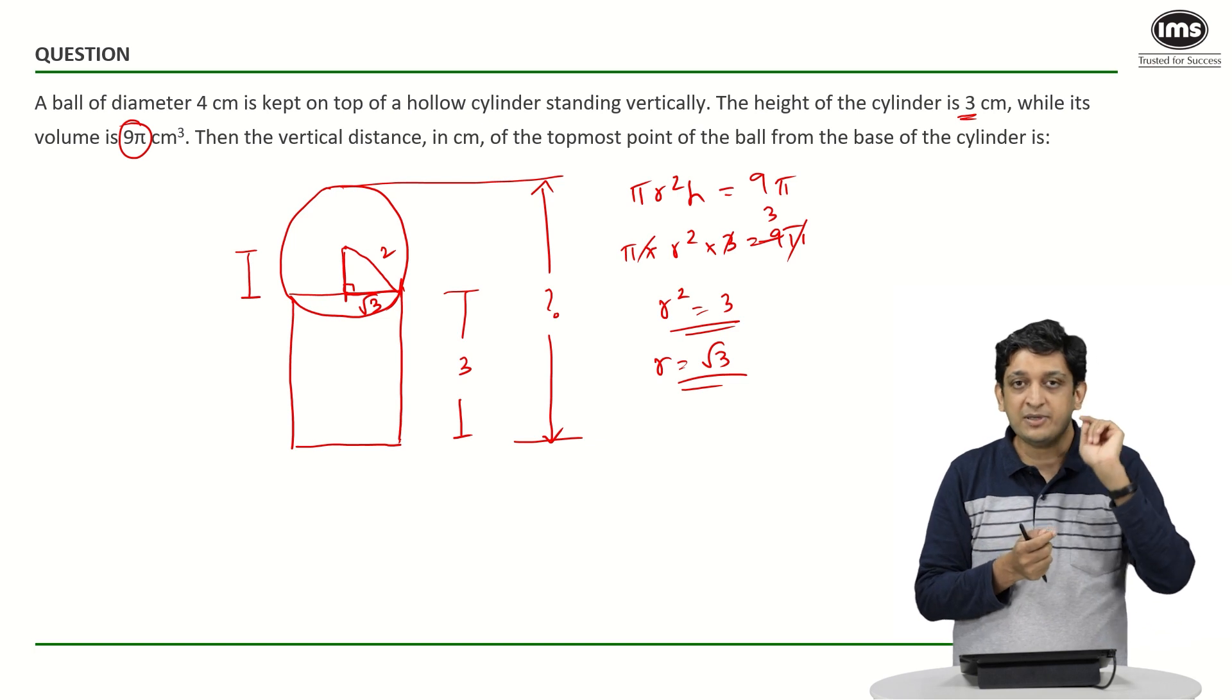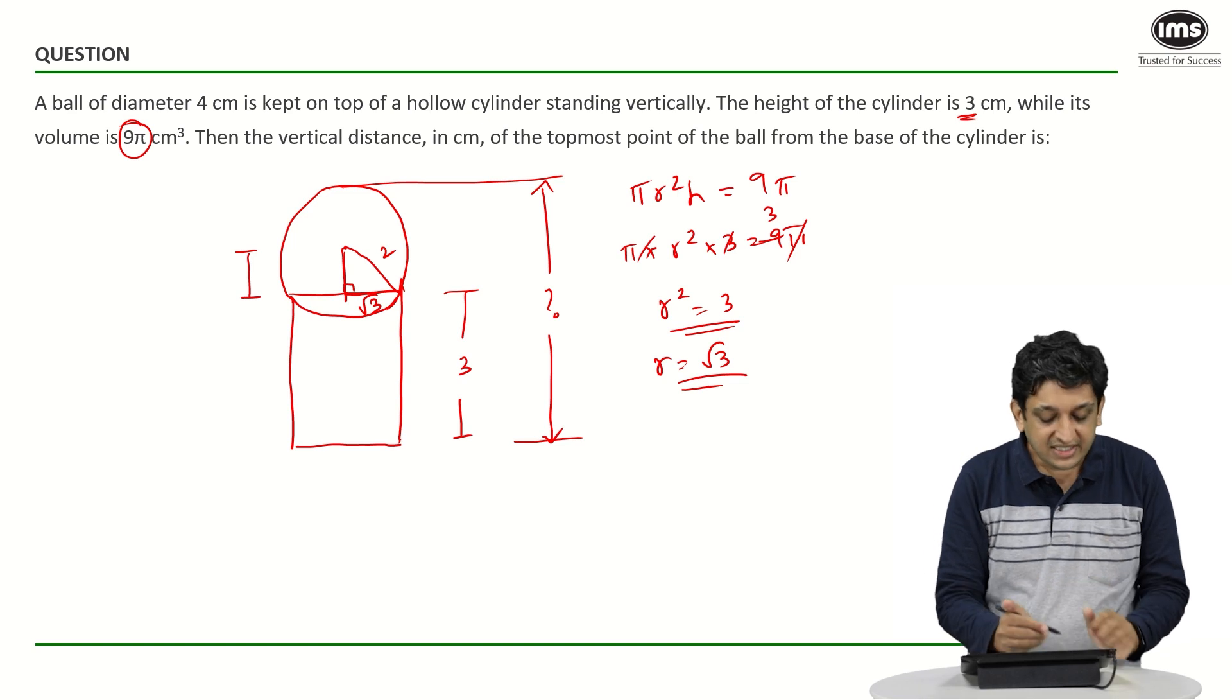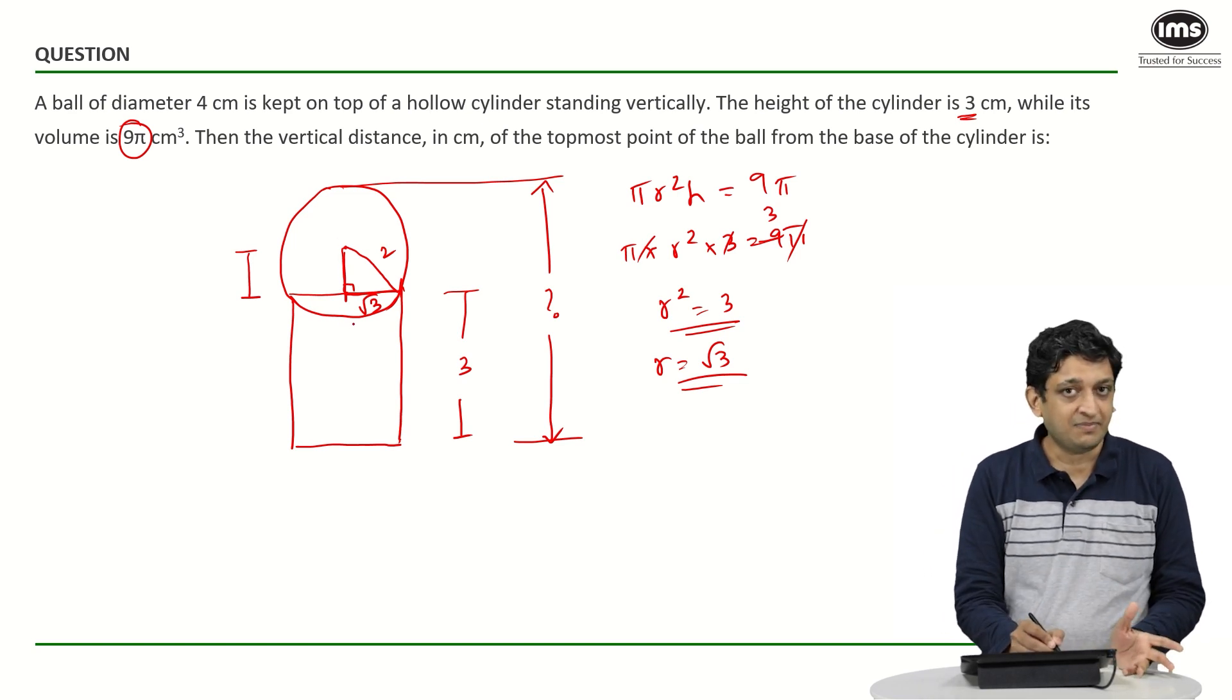And as we know if you drop a perpendicular from the centre of the circle to a chord then it also bisects the chord. So in this case we have dropped a perpendicular that part is clear.